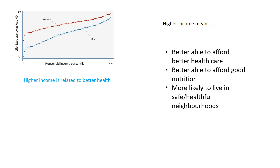Wealthy people are also more likely to live in safe and healthy environments. If you're poor, you're going to live in probably a run-down neighborhood with drug dealers on the corner, maybe a lot of crime and violence. You're more likely to engage in unhealthy activities if you're a child in those environments, and more likely to be a victim of crime. In general, you are in a less healthful environment if you are poor.